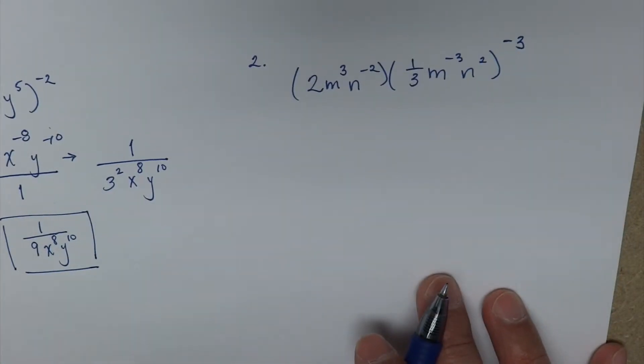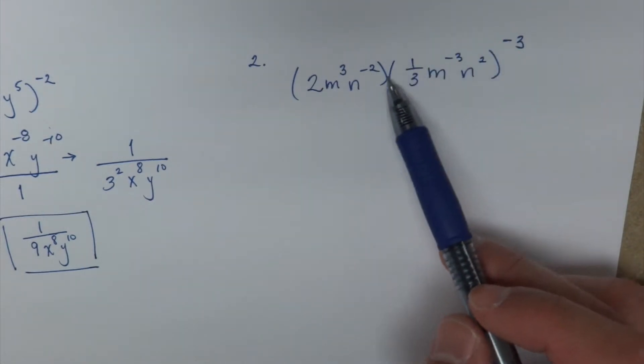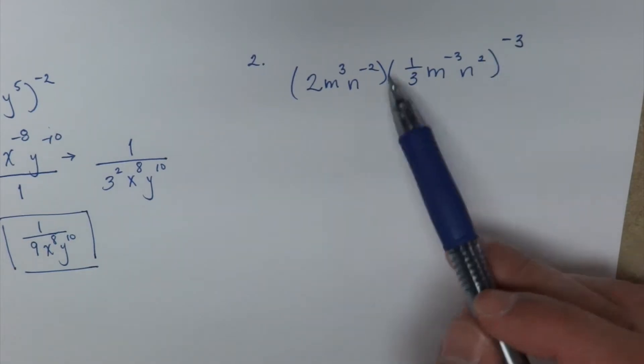Alright guys, let's go ahead and do one more example, it's a little bit more challenging. You notice we have two expressions here being multiplied. Because this guy has a negative 3 I'm going to go ahead and do this one first.